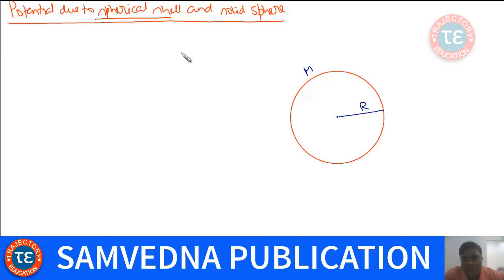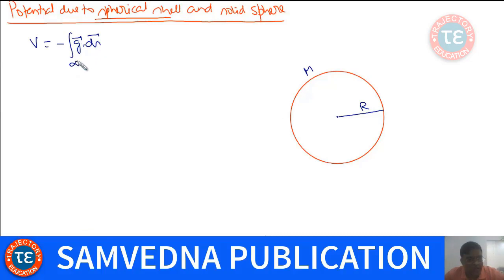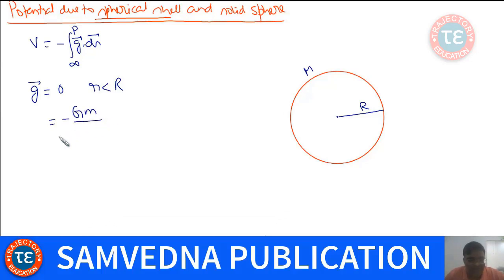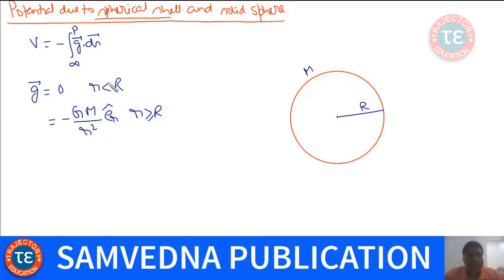We will find the potential due to the Spherical Shell of mass M and radius R using the relation between potential and the gravitational field, integrating from infinity to point P. We have already found the gravitational field G as a function of R for the Spherical Shell using Gauss's Law of Gravitation: G is zero for a point inside, and equal to GM/R² (E_R) for R greater than or equal to capital R.